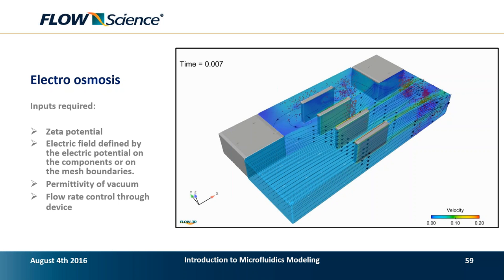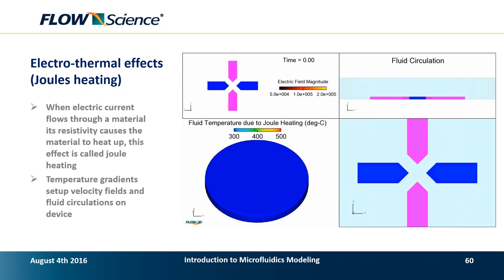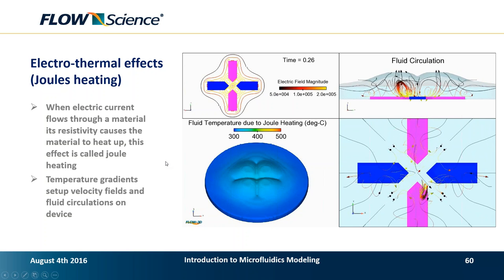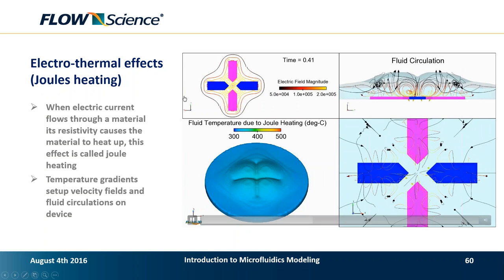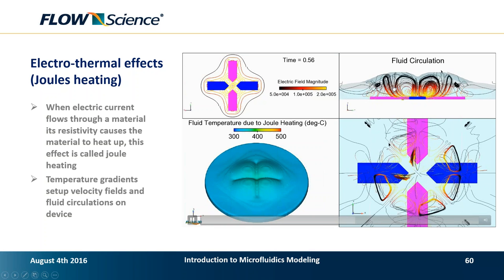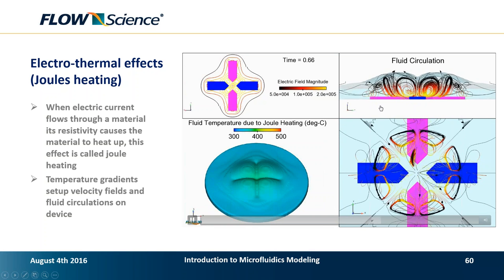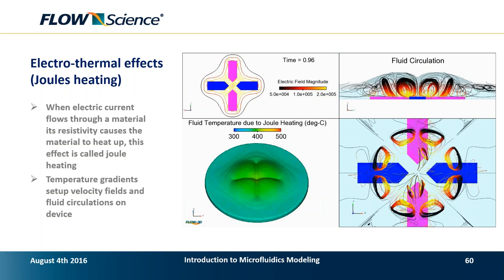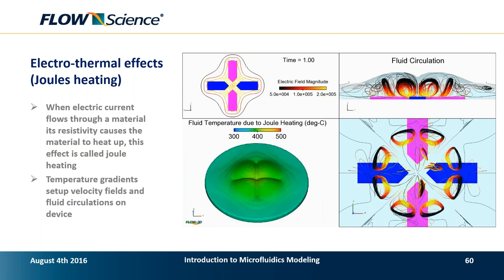For Joule heating: electric current flows through a material, resists resistivity, and causes materials to heat up, which in turn can induce circulations. With four electrodes creating an electric field in a conducting fluid, well-known circulation patterns are created, which translate into fluid motion accompanied by heating.